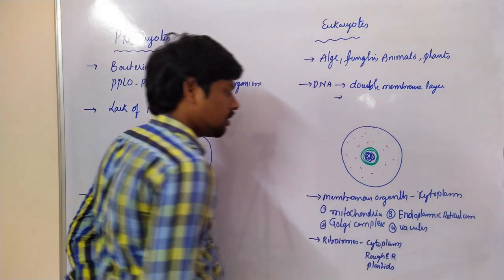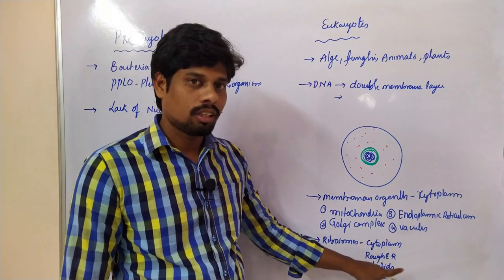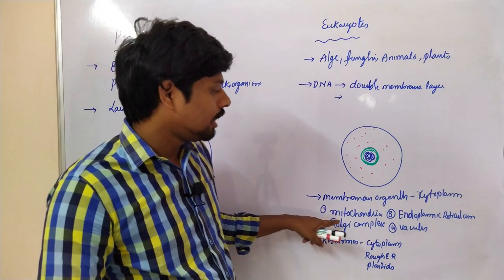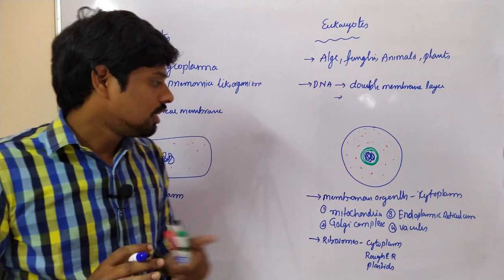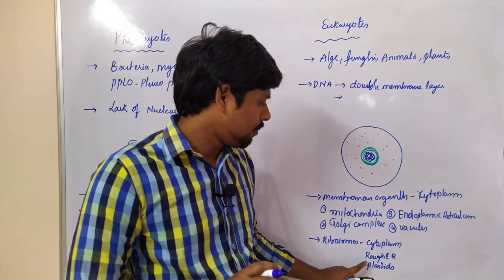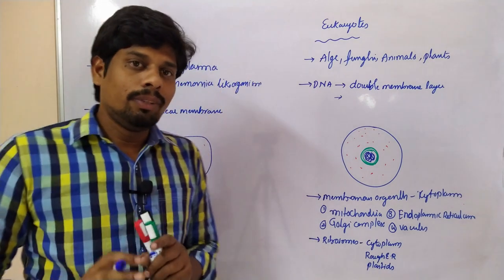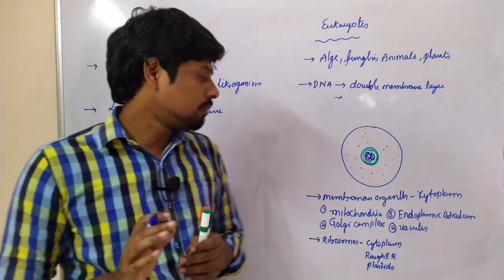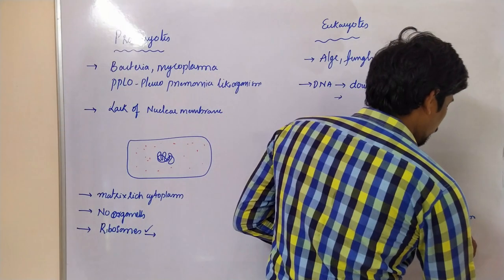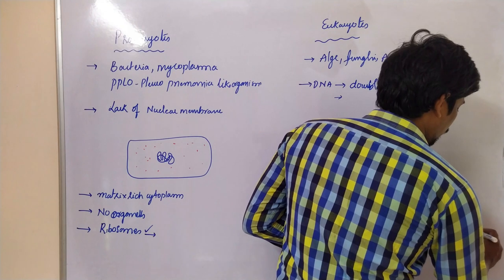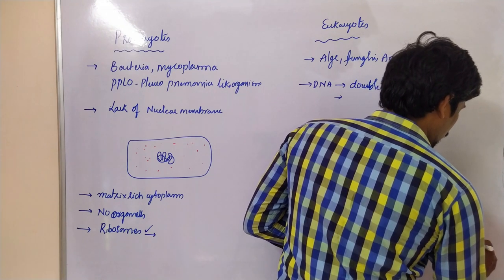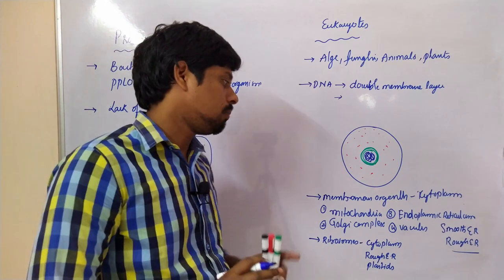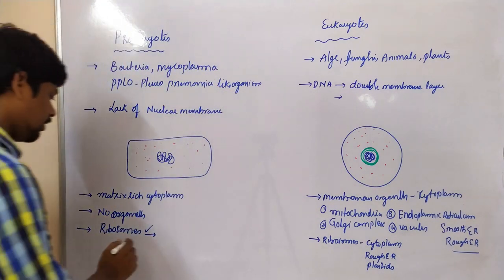The endoplasmic reticulum is an organelle. If that organelle has ribosomes on its surface, it is called rough endoplasmic reticulum. If the endoplasmic reticulum does not have any ribosomes on its surface, it is called smooth endoplasmic reticulum. So there are two types: smooth ER and rough ER.